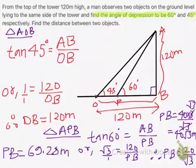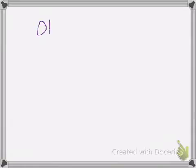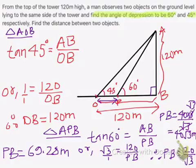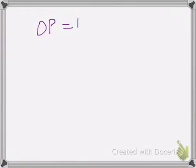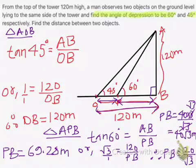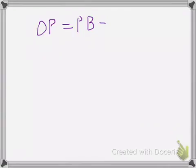Now we have to find the distance between the objects, which is the distance OP. We can calculate the distance OP equals OB, which is the total distance, minus PB. So we can write OP equals OB minus PB.